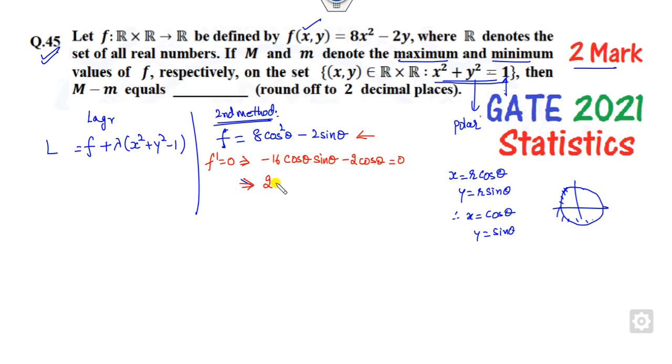You can take 2cos θ as common, so the remaining thing is 8sin θ + 1 = 0. What is the meaning of that? There are two possibilities: either cos θ will be zero or sin θ will be -1/8. What will happen if cos θ is zero? Then the value of sin θ is nothing but one. If sin θ is -1/8, then this value will be 64 - 1 = 63, and cos θ is √63/8.